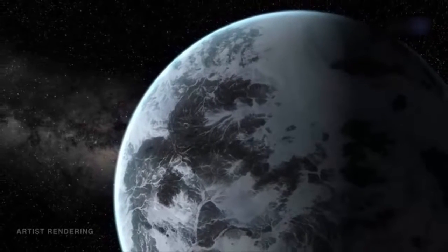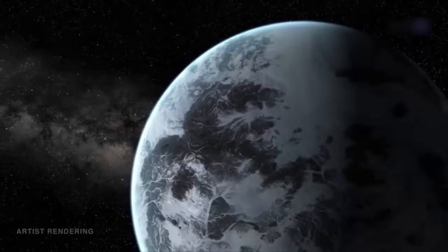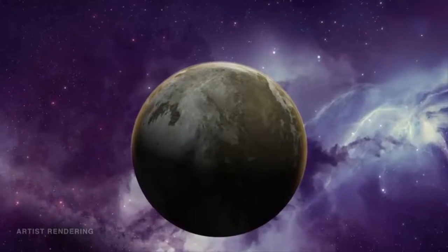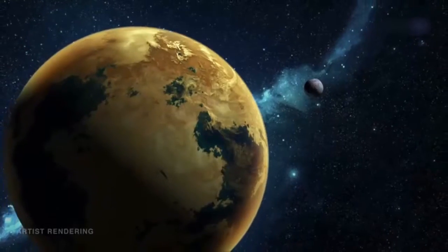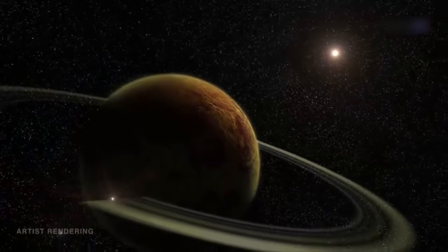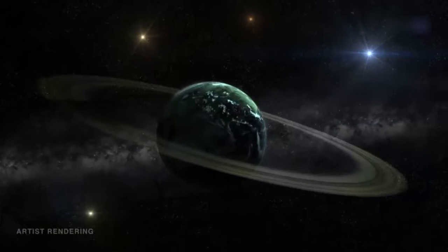The menagerie includes planets with densities greater than iron and lower than styrofoam, planets smaller than Mercury and bigger than Jupiter, planets with one sun, two suns, and even four suns.